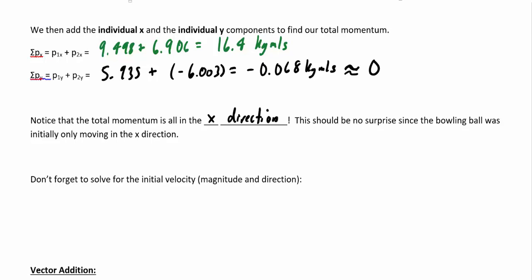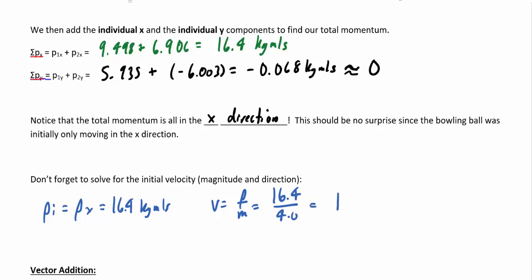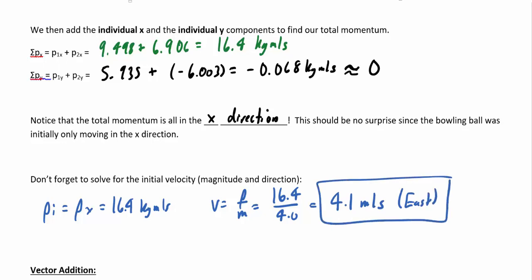We know that the total momentum is really just equal to the Px component, which is 16.4 kilogram meters per second. Since we want velocity, V equals momentum over mass: 16.4 divided by 4 gives about 4.1 meters per second to the east.